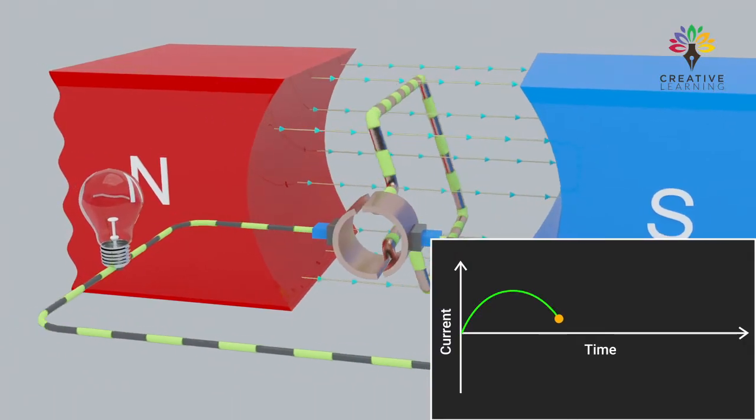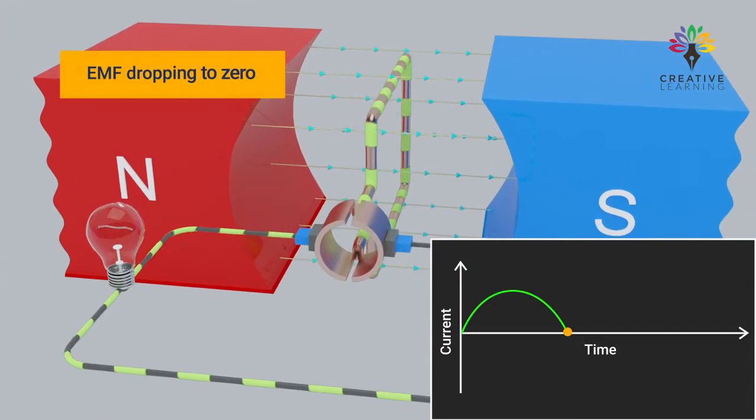As the armature continues to rotate to 180 degrees, the induced EMF drops to zero.